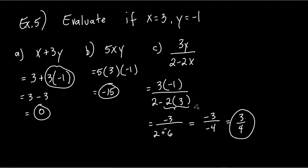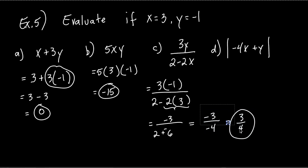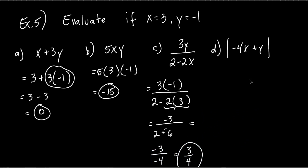Not so bad. You did this a ton in Algebra 1. Expression D: the absolute value of negative 4X plus Y. Remember — do all the stuff inside the absolute value before you apply it. Don't make everything inside positive to begin with. Work everything inside first, then figure out what you get.